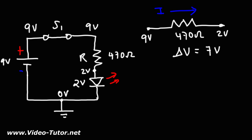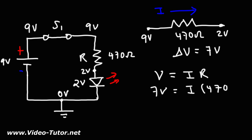That's what voltage is — electric potential difference between two points. Now using Ohm's law, we can calculate the current. We have seven volts across the resistor and a 470 ohm resistor. So the current is going to be seven divided by 470, and we get a current of 0.01489 amps.